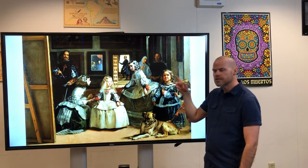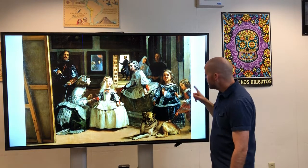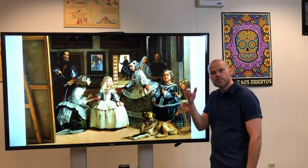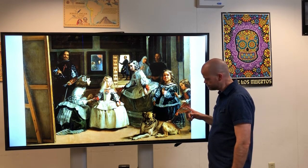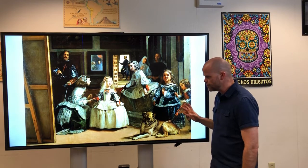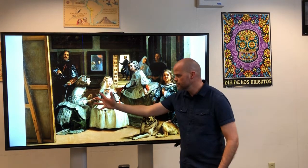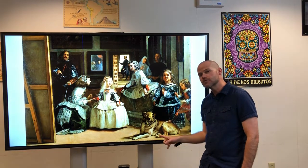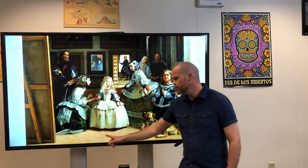Ella tiene pelo largo y castaño. Y finalmente esta niña también tiene pelo largo y castaño, pero ella lleva un vestido rojo. Muy bien. Enfrente de las niñas hay un perro. El perro está acostado en el piso.